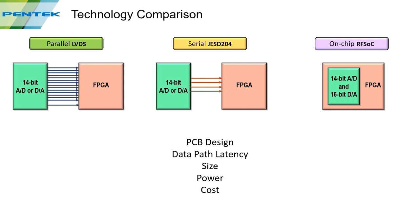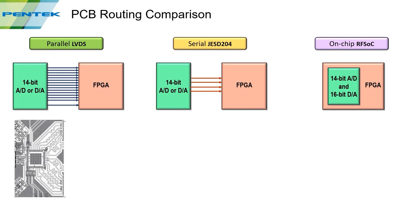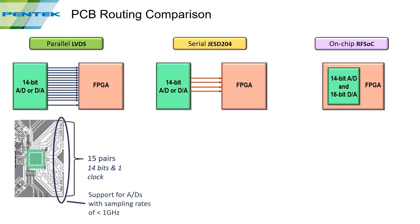A typical PCB layout for a parallel data converter shows the ADC in the center with a signal pair per bit plus one clock pair going to the FPGA. Some of these pairs are squiggly — sometimes called trombone tuning — used to add length to shorter signal paths so all routed signals arrive at the FPGA at the same time. This type of interface is limited to converters running at about 1 GHz.